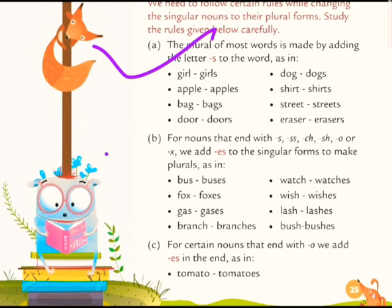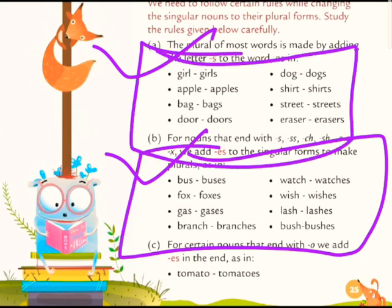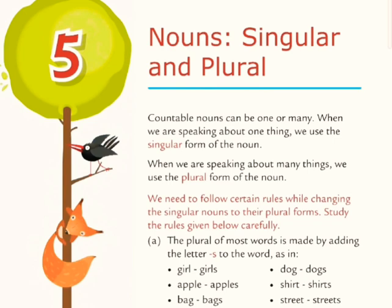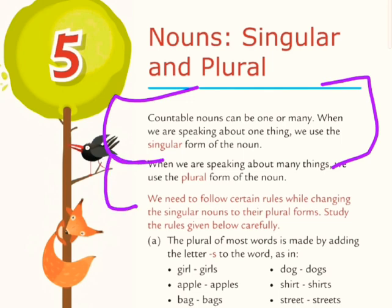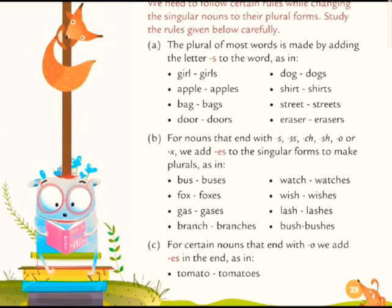Okay bachche, aaj aapne Rule A aur Rule B padha hai. Isko achhe se taiyar karenge aur saare examples ki writing mein practice karenge, likhkar practice karenge. Aaj ka aapka work yeh hai: what is singular and what is plural. Yahan se likhenge: countable nouns can be one or many; when we are speaking about one thing, we use the singular form of the noun; and when we are speaking about many things, we use the plural form. Uske baad yeh saari definitions write karenge. Enjoy your video and take care.